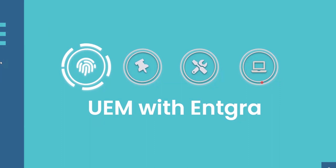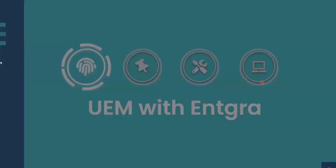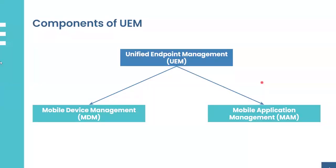Before moving on to the release, let me provide a brief overview for those who may be new to this space. UEM stands for Unified Endpoint Management, which has two main parts: Mobile Device Management and Mobile Application Management. Mobile Device Management lets you onboard your enterprise devices — these can be mobile devices or IoT devices, smartphones or any device connected to the internet. You can set up device configurations, enforce policies, and execute operations remotely.